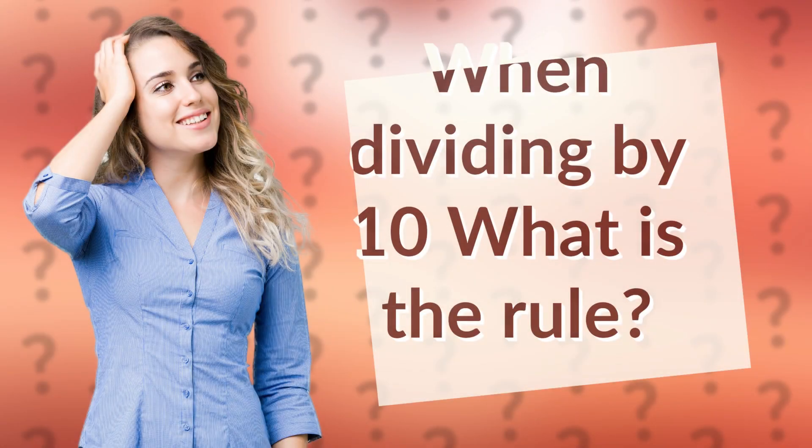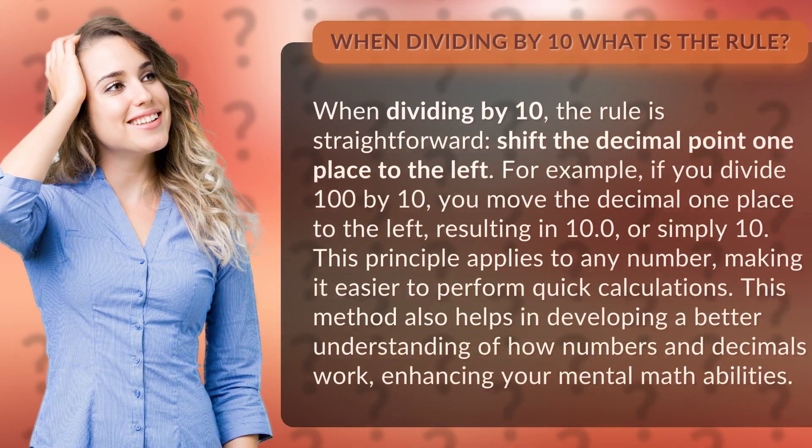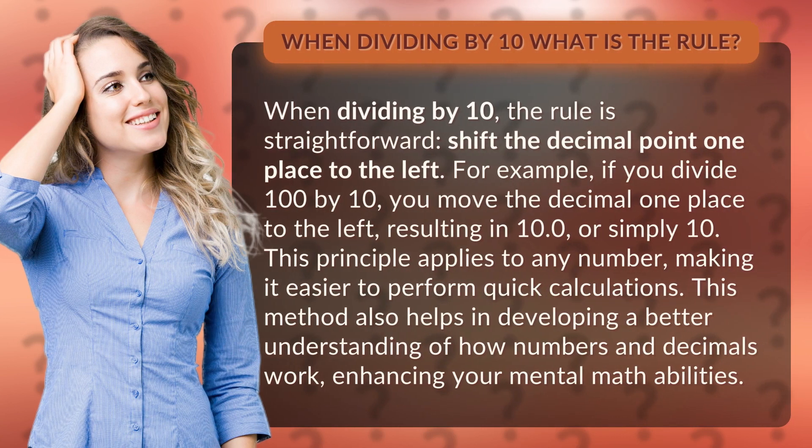When dividing by 10, what is the rule? When dividing by 10, the rule is straightforward: shift the decimal point 1 place to the left.